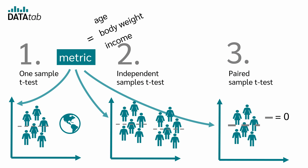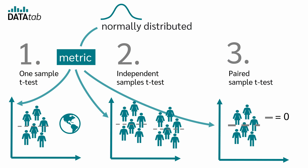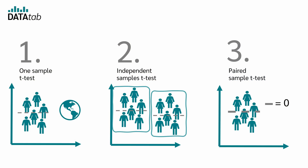Examples of metric variables are age, weight, and income. A person's level of education is not a metric variable. In addition, the metric variable must be normally distributed in all three test variants. To learn how to test if your data is normally distributed, watch the video on Test for Normal Distribution. If your data are not normally distributed, use a non-parametric test such as the Mann-Whitney-U test or the Wilcoxon test. In the case of an independent t-test, the variances in the two groups must also be approximately equal, which you can check using Levene's test.